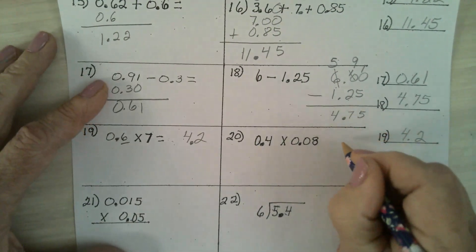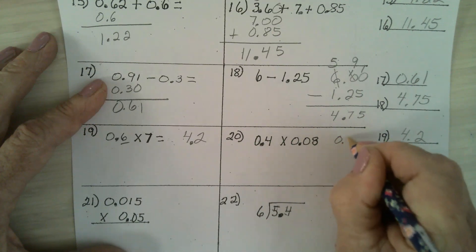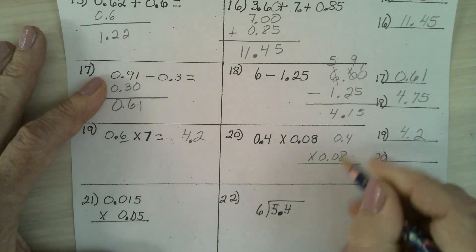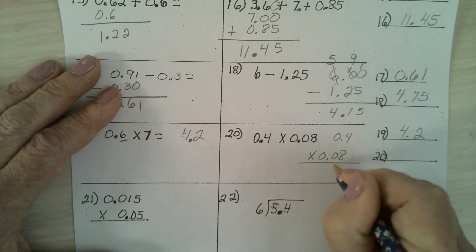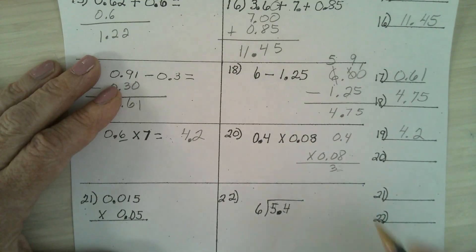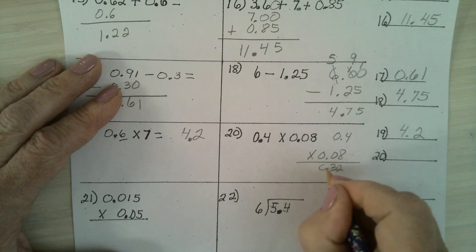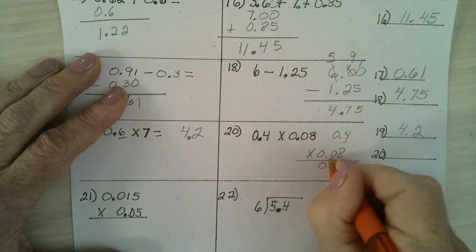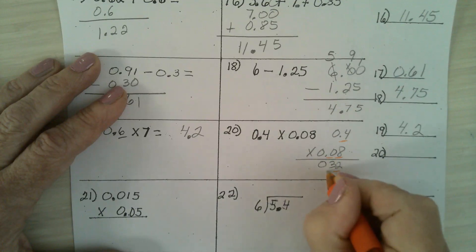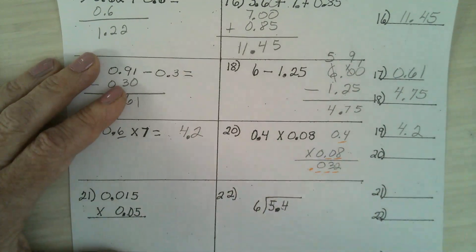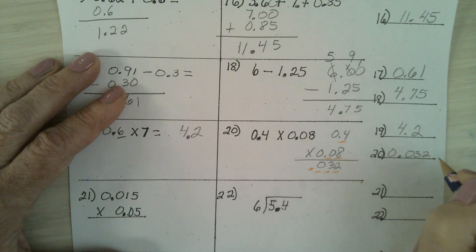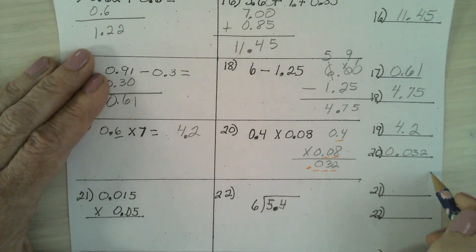In number 20. If you have 0.4 times 0.08, 8 times 4 is 32. You don't have to multiply by the zeros. You can say 8 times 0 is 0. Now in the problem, how many numbers are behind a decimal point? Count them. 1, 2, 3. The answer should be 0.032. You can put a zero there. But it's 32 thousandths. Are there any questions?